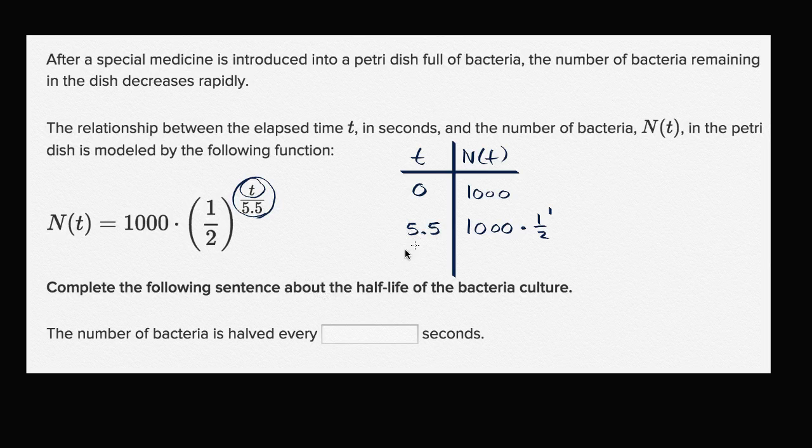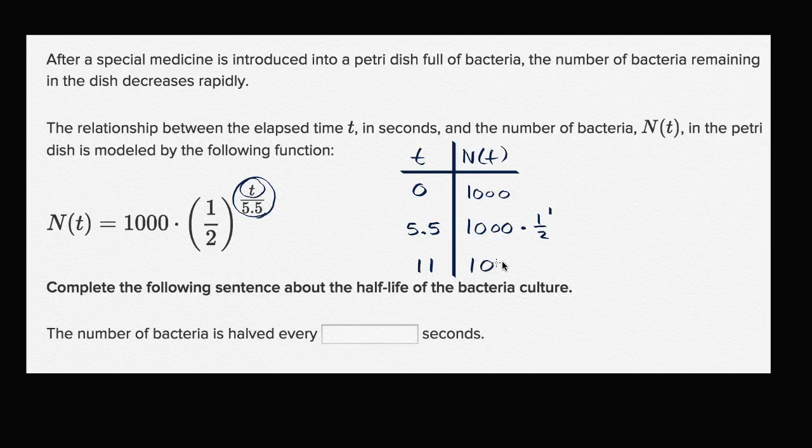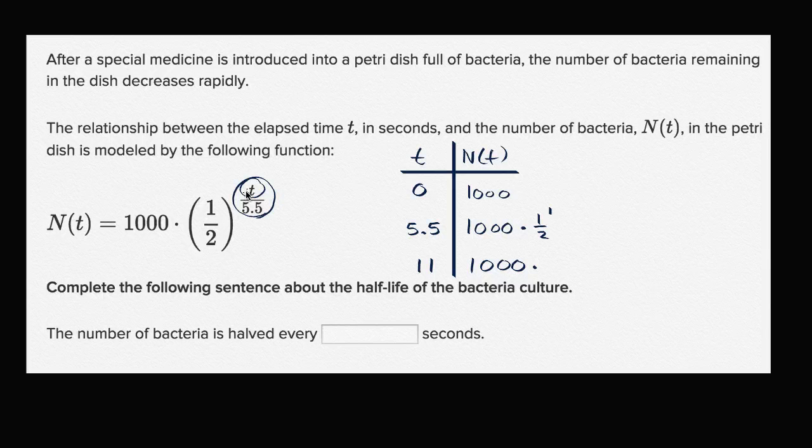And likewise, we wait another 5.5 seconds. So if we go to 11 seconds, then this is going to be 1,000 times 11 divided by 5.5 is 2, so times one-half to the second power, times one-half times one-half.